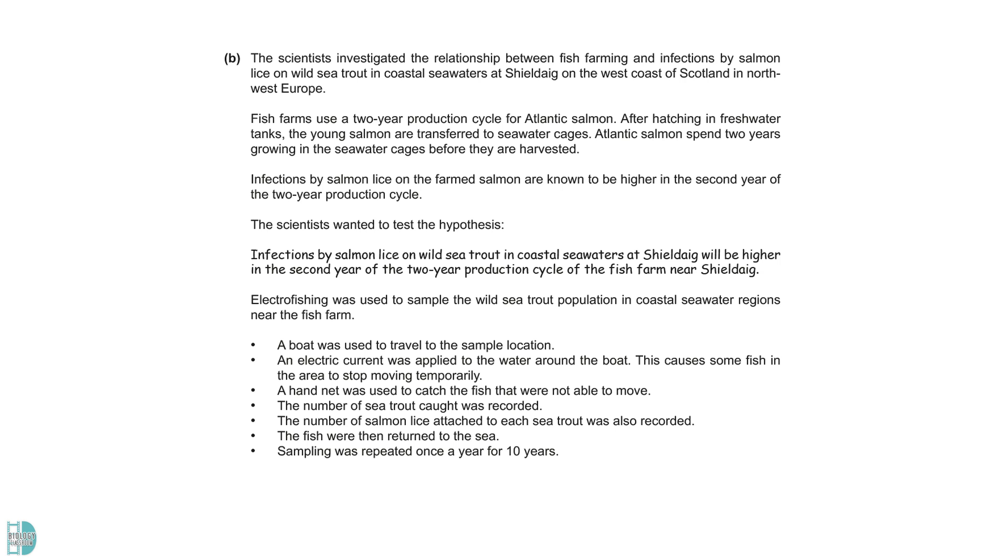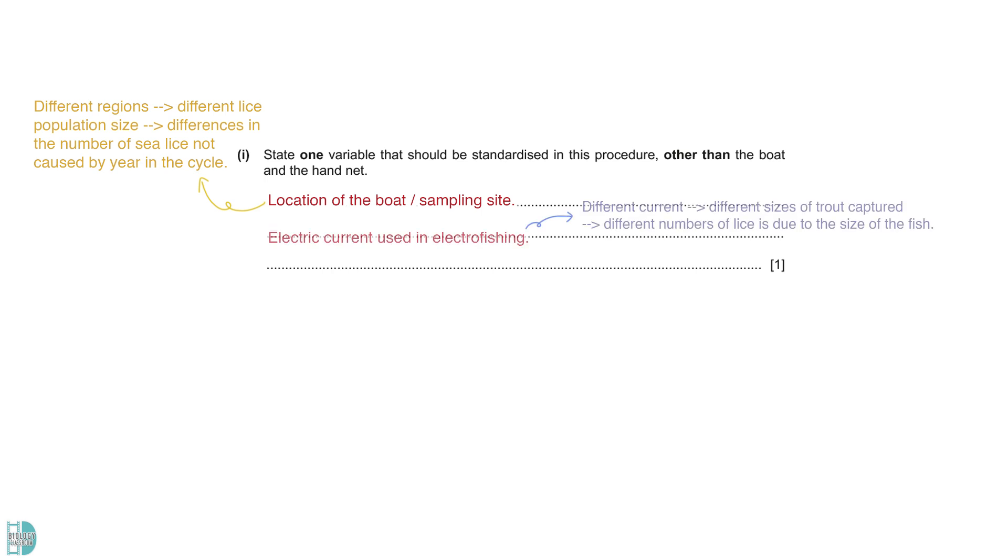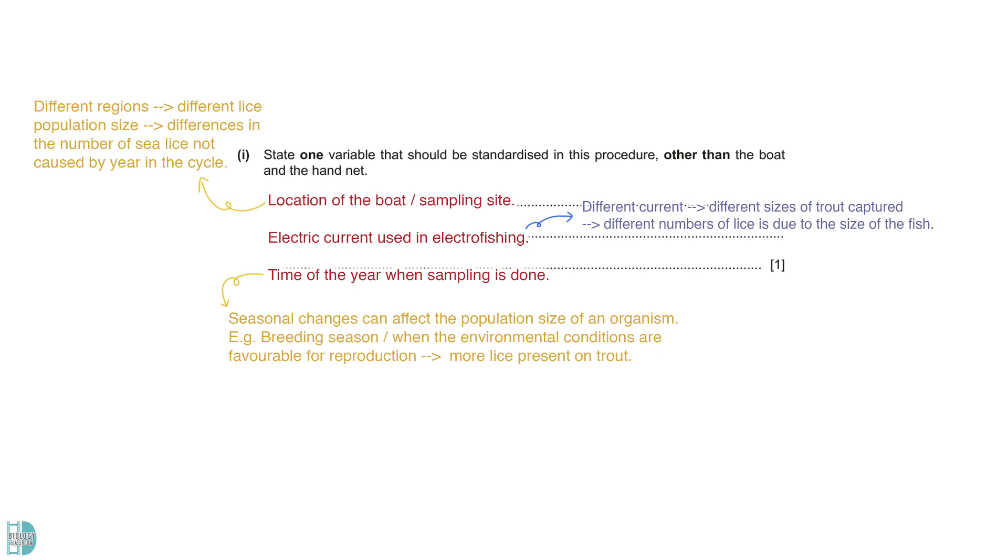In part B, scientists want to test if the infections are higher in the second year of the two-year production cycle. They use electrofishing to capture sea trout and count the number of sea lice on them. Question 1 asks you to state one variable that should be standardized in this procedure, other than the boat and the hand net. The location of the boat and the sampling site should be standardized. This is because in different regions of the water, the population size of sea lice may not be the same. Sampling in different areas lead to differences in the number of sea lice on trout that are not caused by the year in the cycle. The electric current should also be standardized. A change in the current may affect the sizes of the fish being captured. This results in a different number of lice due to their different sizes.